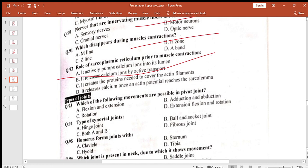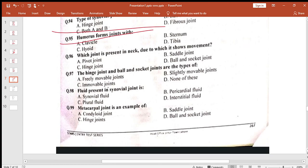Which of the following movements are possible in pivot joint? Rotation. Types of synovial joint: hinge and ball and socket. Do synovial joint ke humare pas types hain. Humerus forms joint with clavicle. Which joint is present in neck? Pivot joint neck mein paaya jata hai.